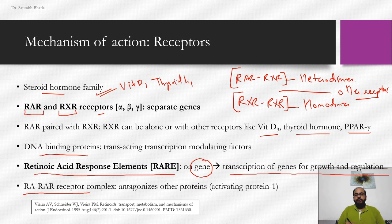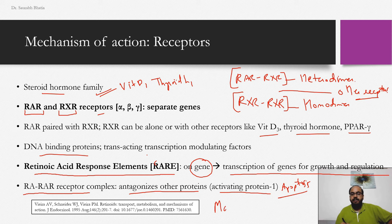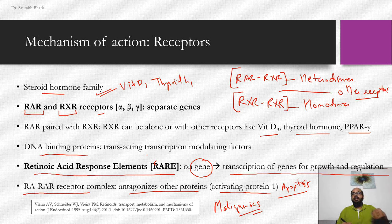RAR-RXR receptor complexes are also known to antagonize other proteins — for example, activating protein 1 (AP-1), which is responsible for apoptosis. Retinoic acid along with its receptors can cause apoptosis of cells that are not dividing properly, which is important in malignancies. But in normalization of epidermal turnover as in psoriasis, you need to decrease proliferation of inflammatory cells while increasing keratinocyte proliferation of normal keratinocytes, so the skin normalizes.